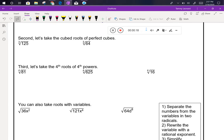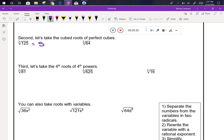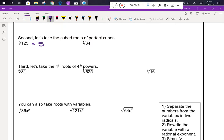The cubed root of 125 is 5 because you know that 5 cubed equals 125. The cubed root of 64 is 4 because you know that 4 cubed is 64.